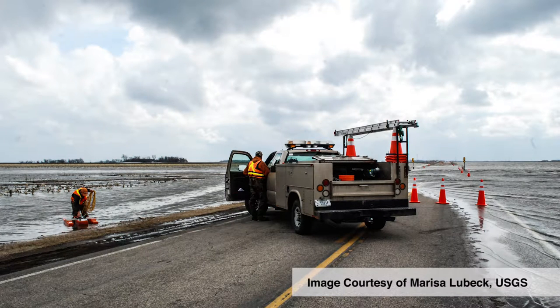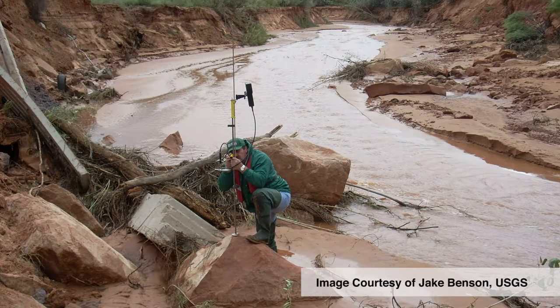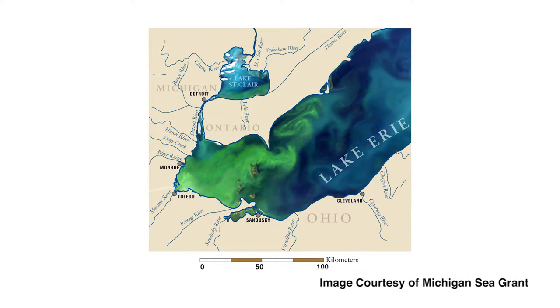The other factor we're seeing is that a lot of the precipitation that's occurring is happening in more intense events. So instead of having 15 small rainstorms over the summer, you might have 10 larger rainstorms with longer periods of less rain in between. The combination of those two factors — the long-term average trends and the increase in intensity of events — are collectively changing the flow in rivers and the corresponding delivery of nutrients into lakes, which end up producing algal blooms and other sorts of phenomena.